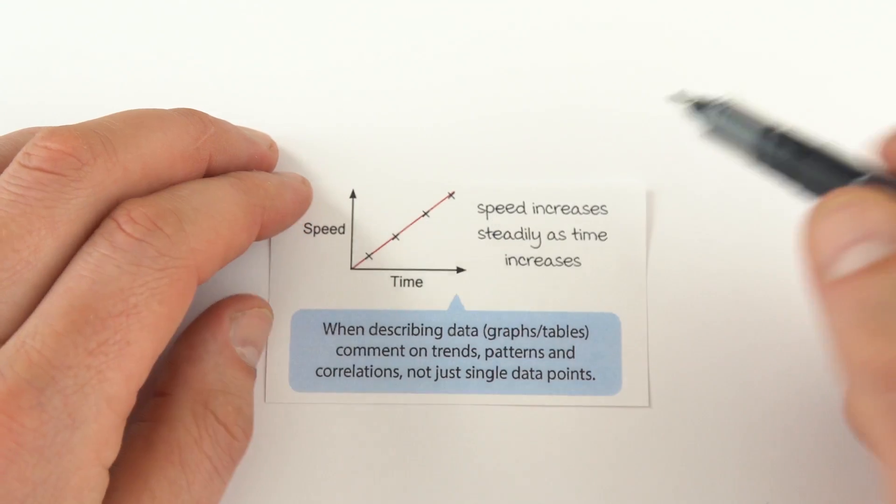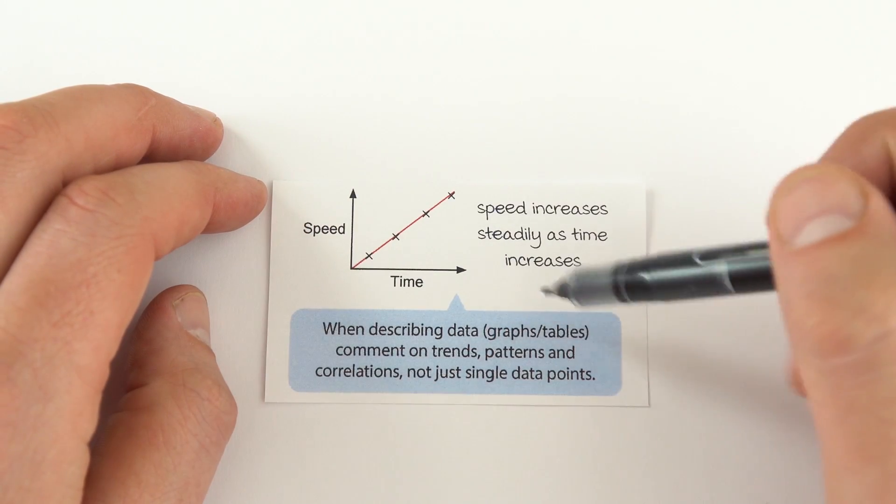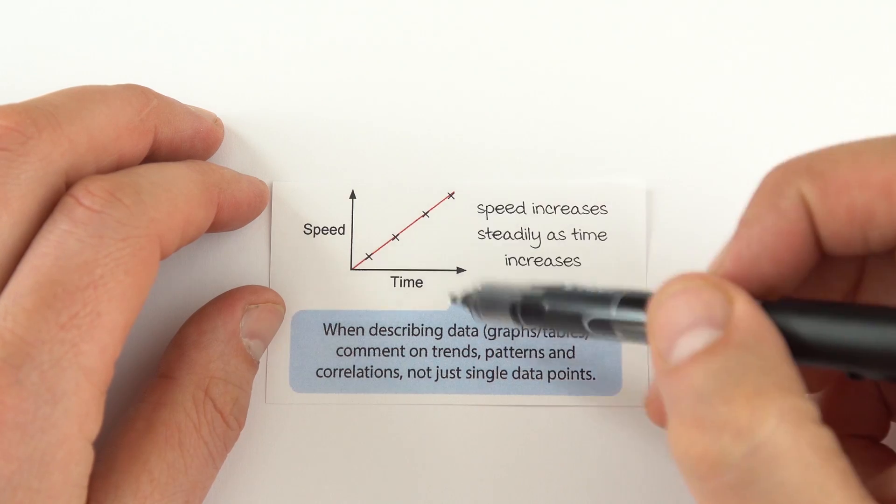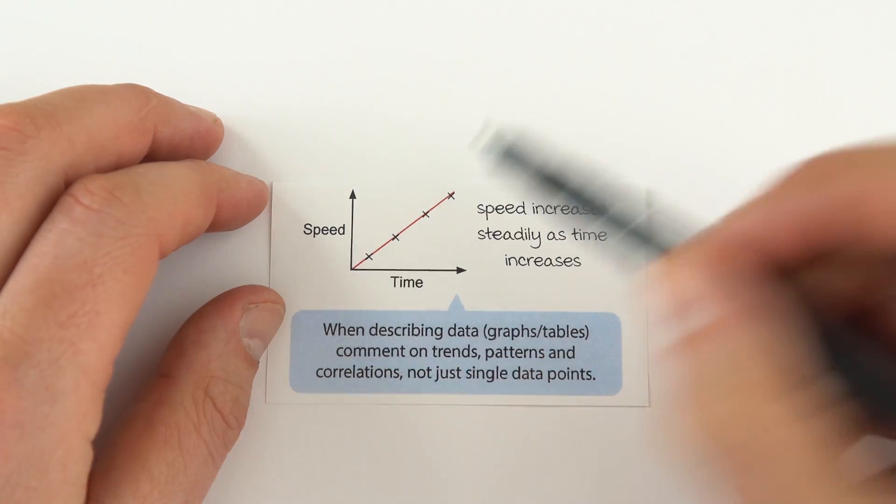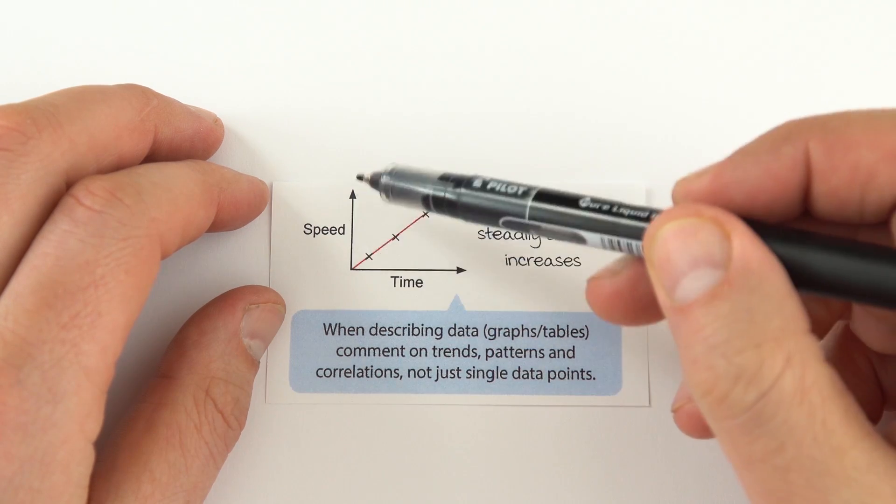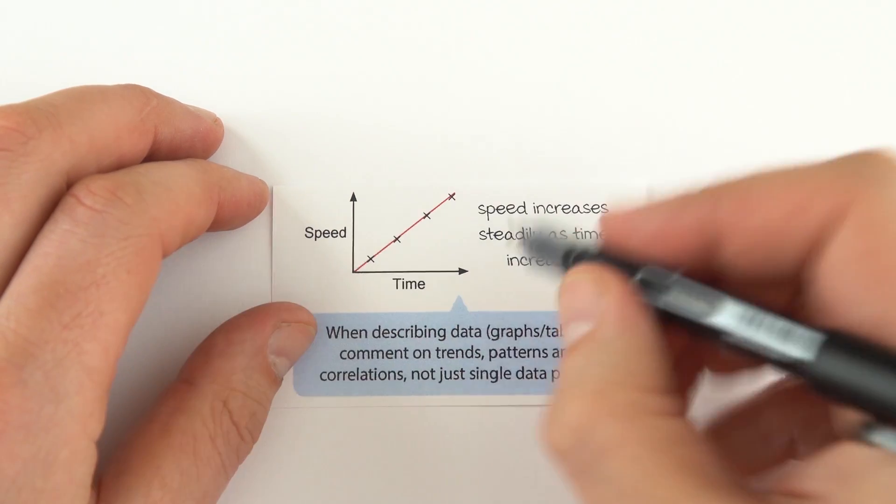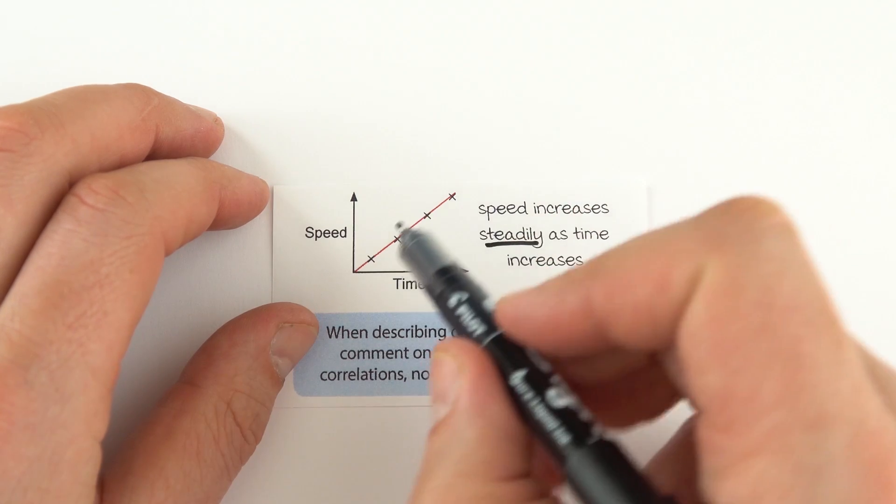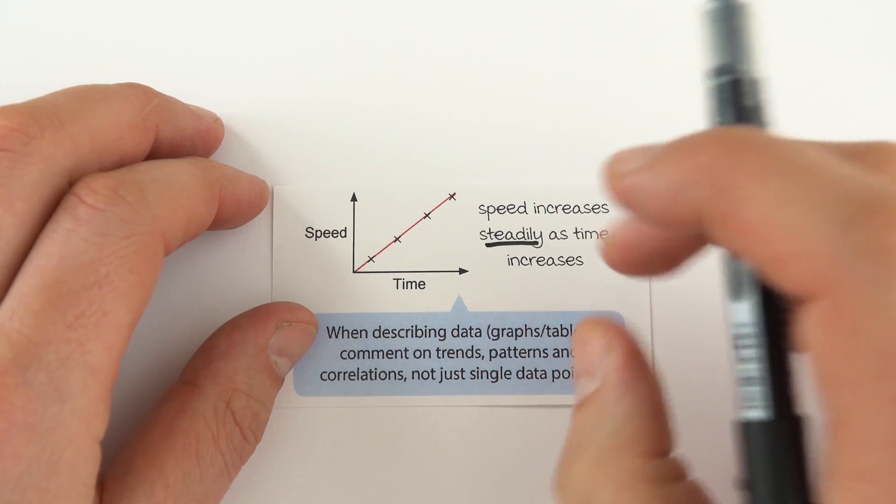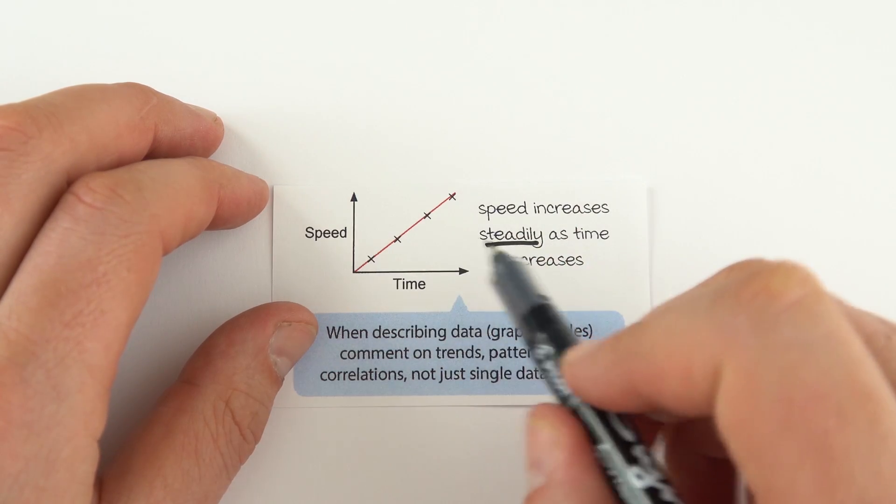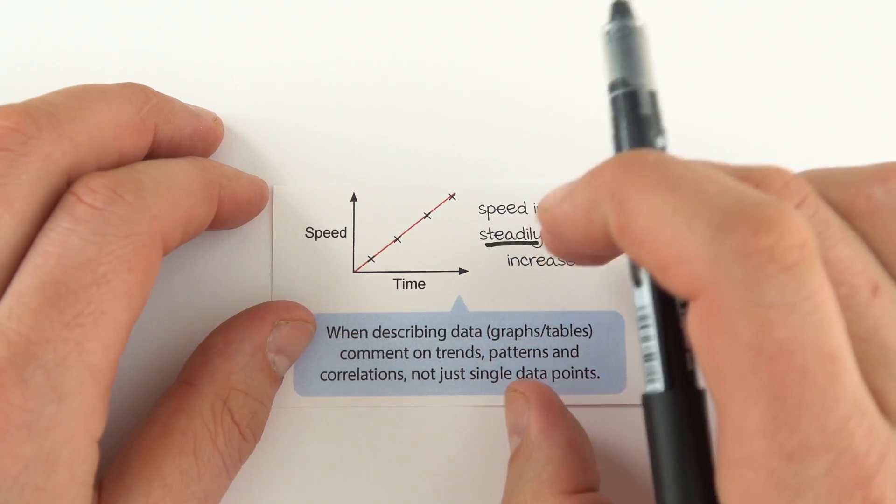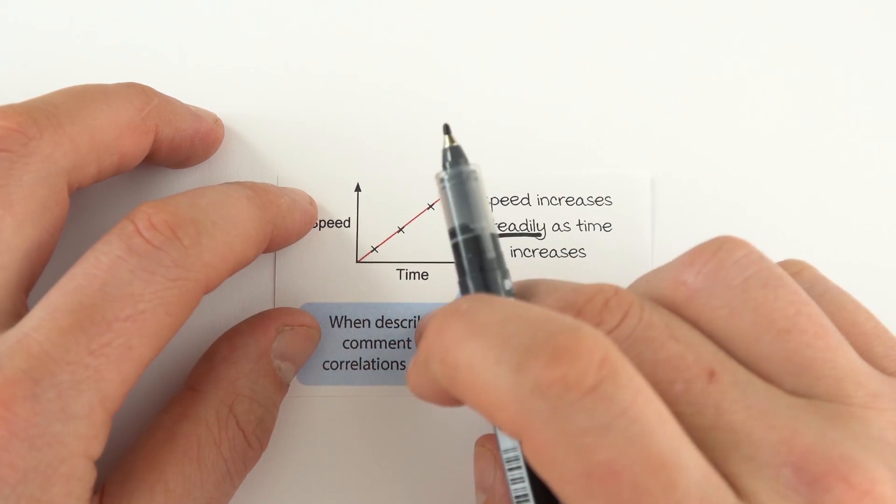It also talks about describing data. This is very much a practical skills kind of thing. When you're describing data, so it might be graphs or tables, you need to think about the whole trend or pattern, not just single data points. So what we might be saying here is that as the time increases, the speed increases steadily. The word steadily is really important because it shows that there's this linear kind of proportional relationship between the two things. When you're describing data, give as much information as possible about what the whole trend is. It might be slowing down, it might be speeding up. Think about using your descriptive language when you're describing data.